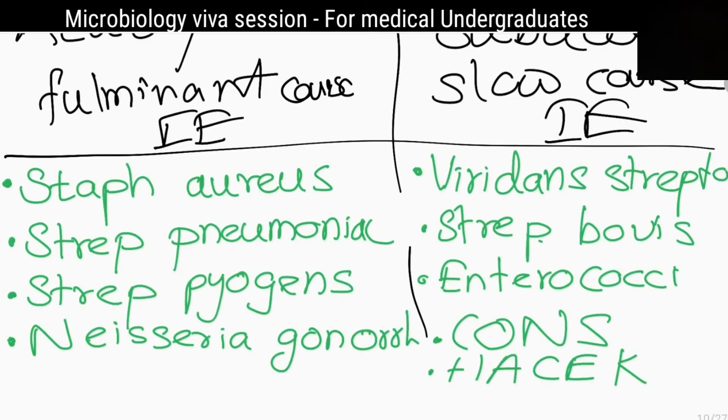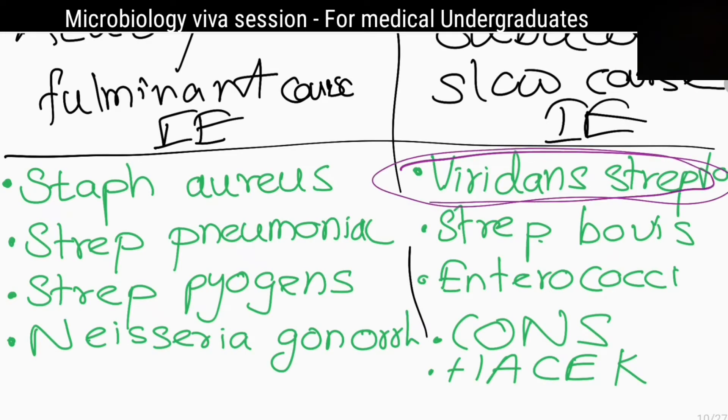Amongst them, what is the most common infective agent causing infective endocarditis? Viridans streptococci.